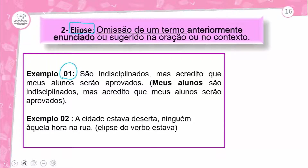Exemplo 1: 'São indisciplinados, mas acredito que meus alunos serão aprovados.' Cadê a elipse? 'São indisciplinados' — quem? 'Meus alunos' foi omitido, não apareceu, foi subentendido pela segunda frase. É como o sujeito elíptico: 'Somos felizes' — quem? Nós. Houve a omissão de um termo anteriormente sugerido. Exemplo 2: 'A cidade estava deserta, ninguém, aquela hora, na rua.' O verbo 'estava' está omitido, mas subentendido pelo contexto. É possível construir uma estrutura dessa maneira com a figura de linguagem de construção.